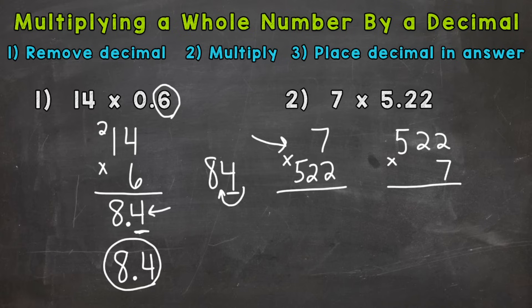So now we multiply. Step two, we multiply and solve here. 7 times 2 is 14. 7 times 2 is 14, plus that 1 is 15. 7 times 5 is 35, plus 1 is 36. So we get 3,654.